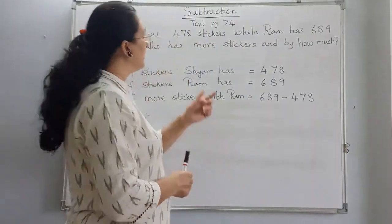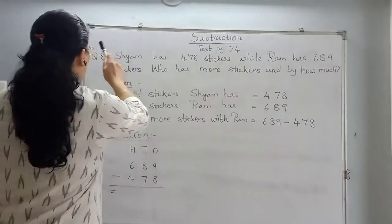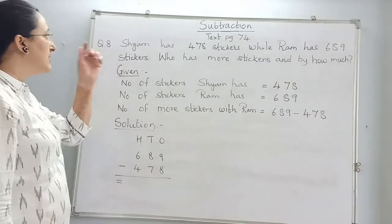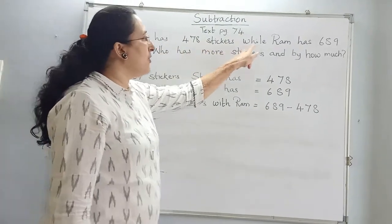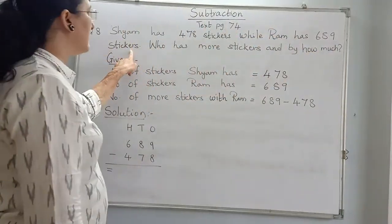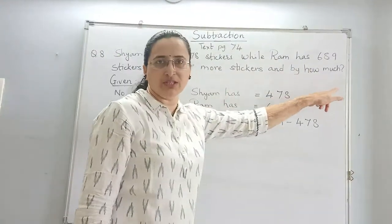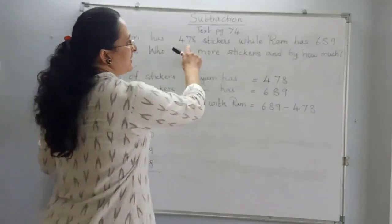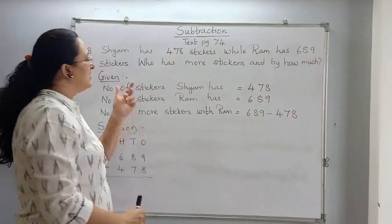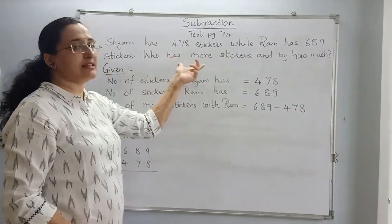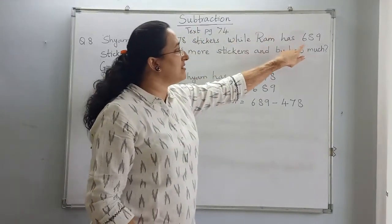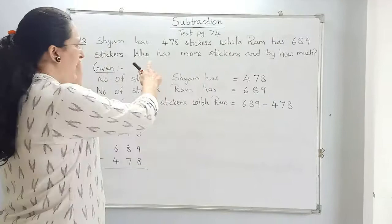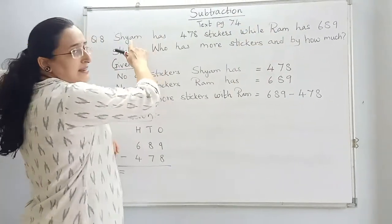Let us see the next sum, also from your textbook page 74, question number 8. Shyam has 478 stickers while Ram has 689 stickers. Who has more stickers and by how much? By looking at the figures 478 and 689, we answer the first question: 689 is bigger, so Ram has more stickers than Shyam.